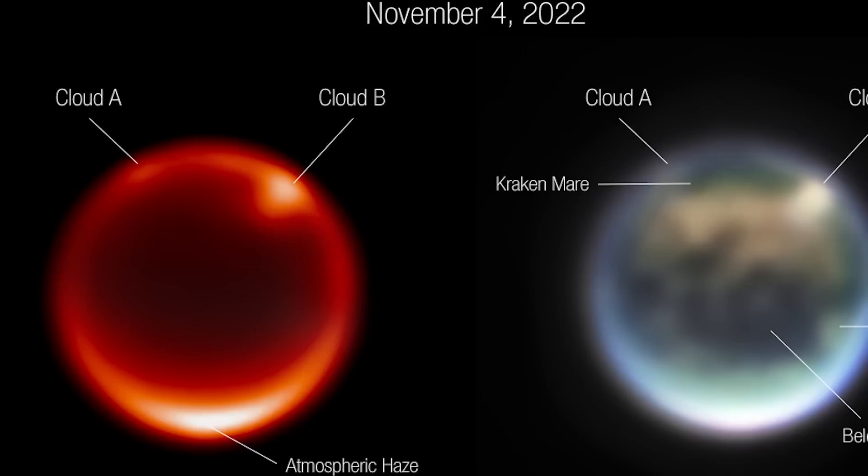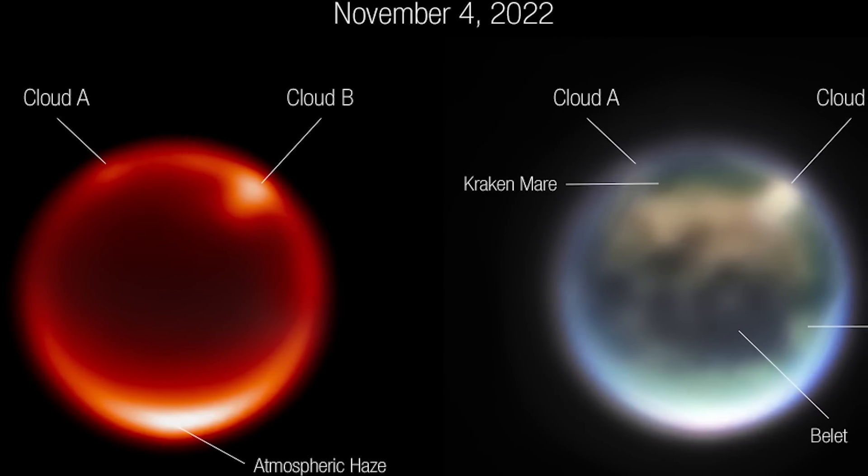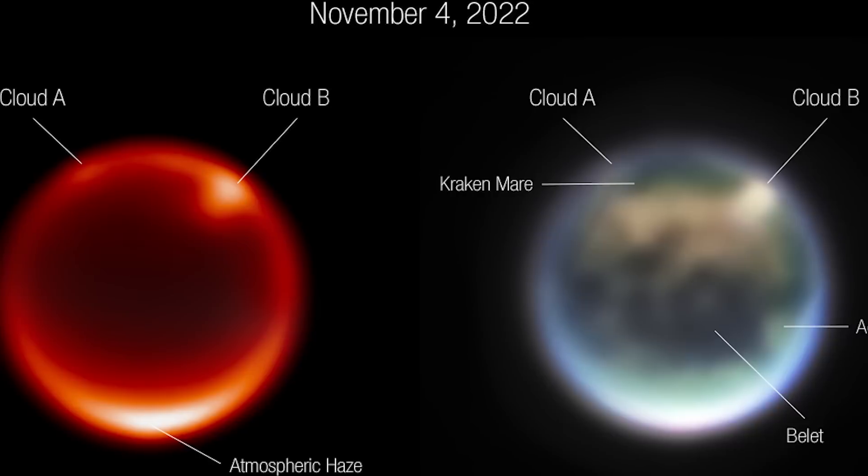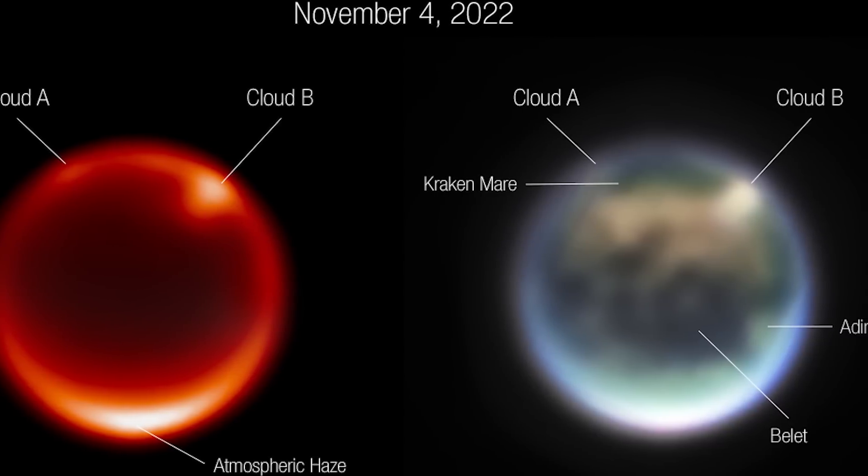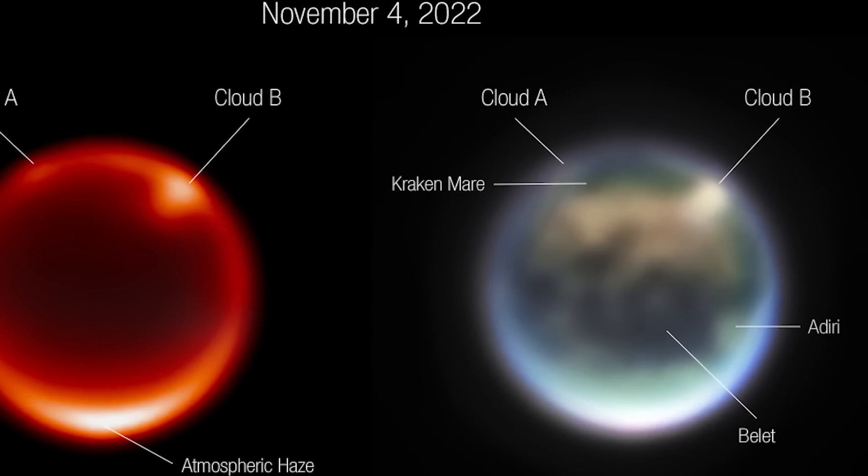In contrast to Earth, however, the liquid on Titan's surface is made of hydrocarbons like methane and ethane, rather than water. Heavy haze permeates the atmosphere, blocking out any sunlight that might otherwise reach the surface.